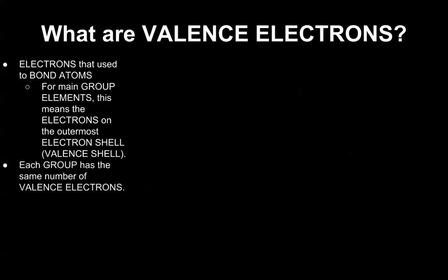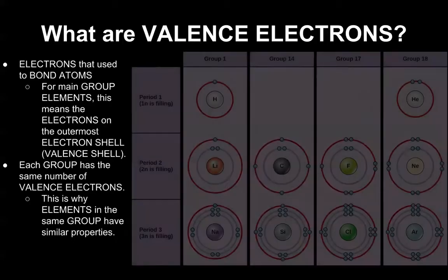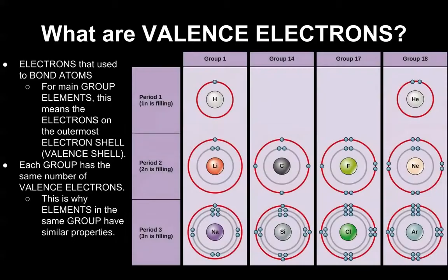Each group has the same number of valence electrons, and this is the reason why elements in the same group have similar properties. To explain that, I have this drawing that shows the valence shells of certain groups on the periodic table.